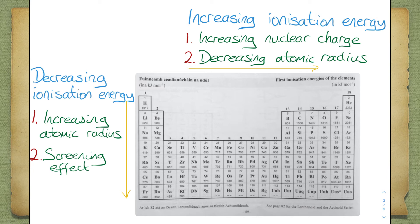The increasing nuclear charge going across the period, coupled with no screening effect, means the atomic radius decreases. The closer the electrons are to the nucleus, the more difficult they are to remove. This means the decreasing atomic radius is the second reason why ionization energy increases across the period.